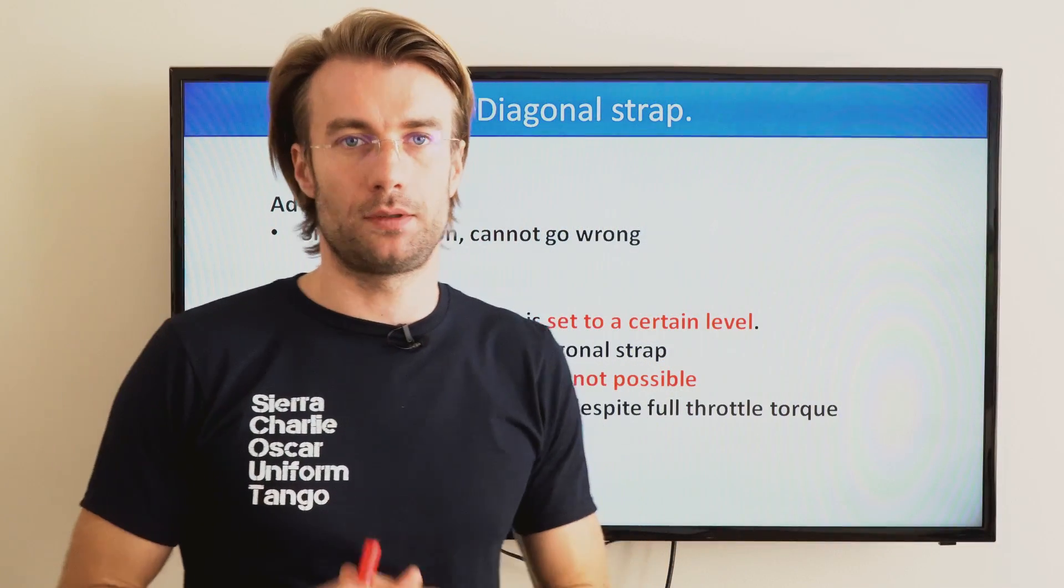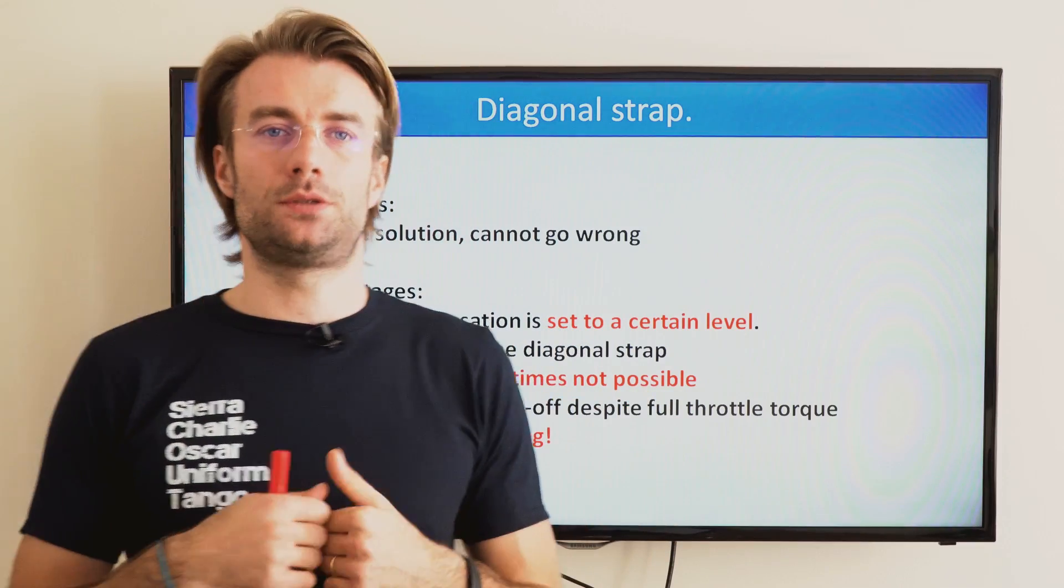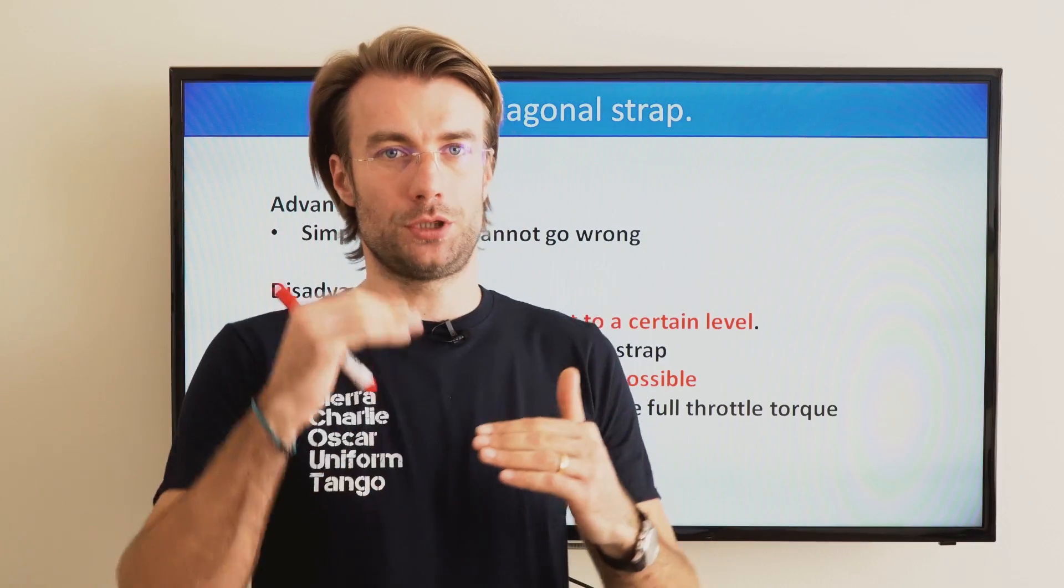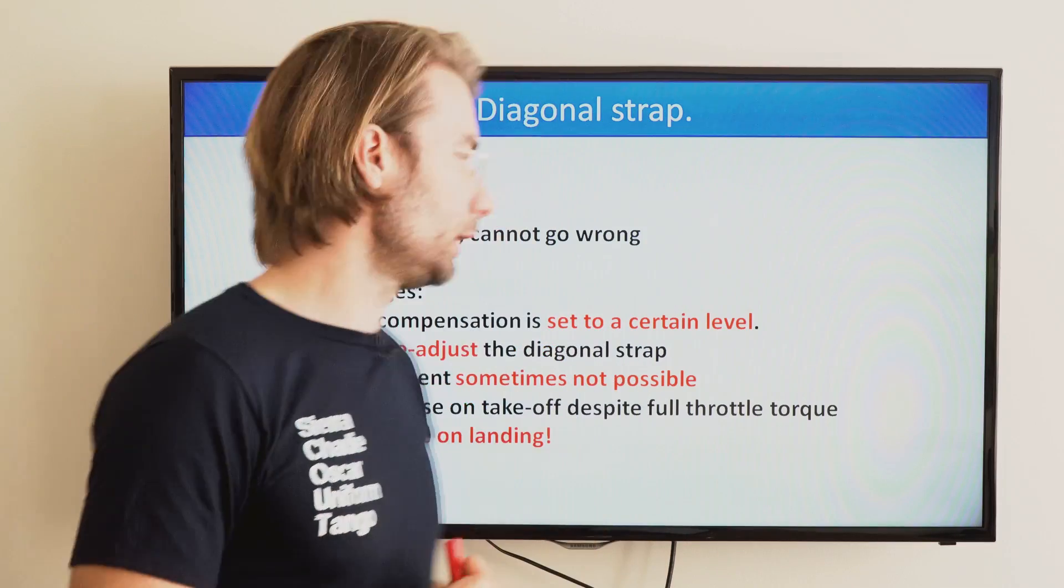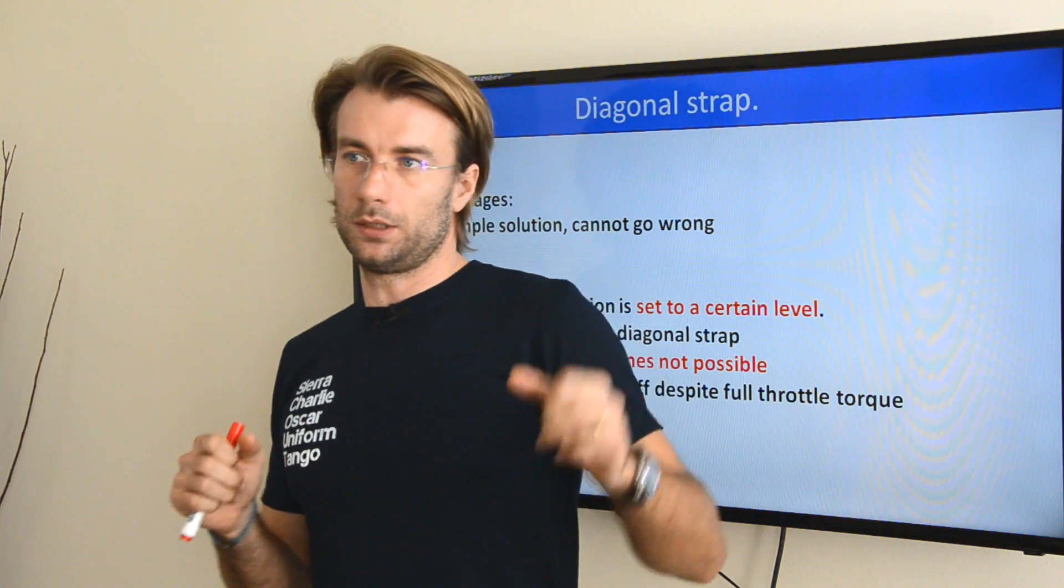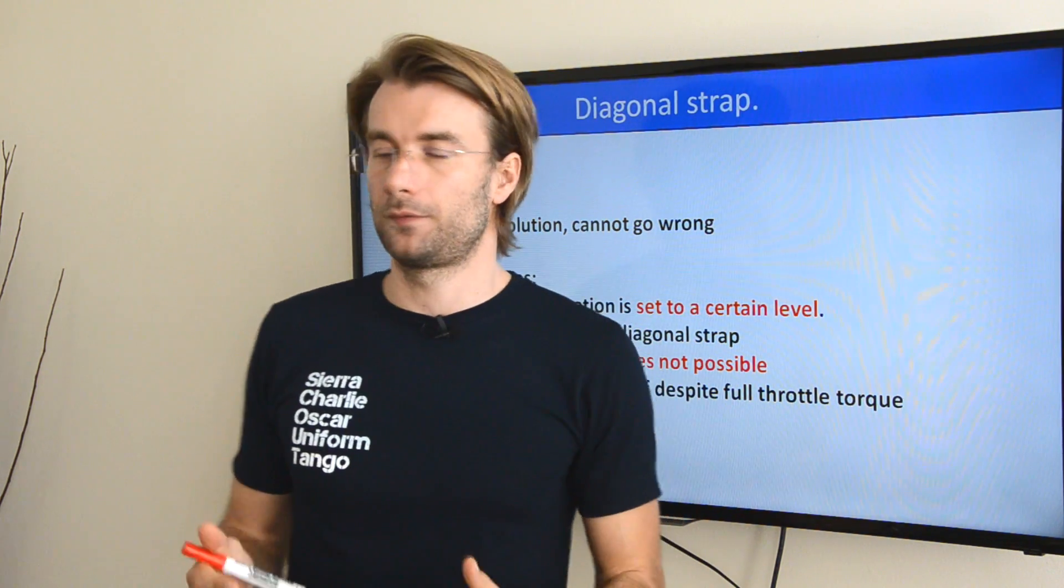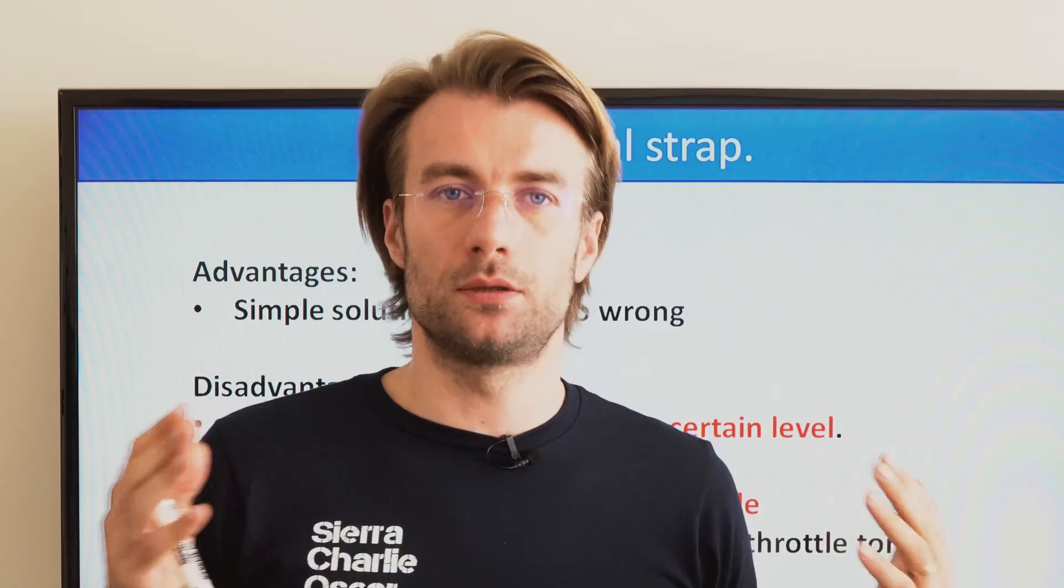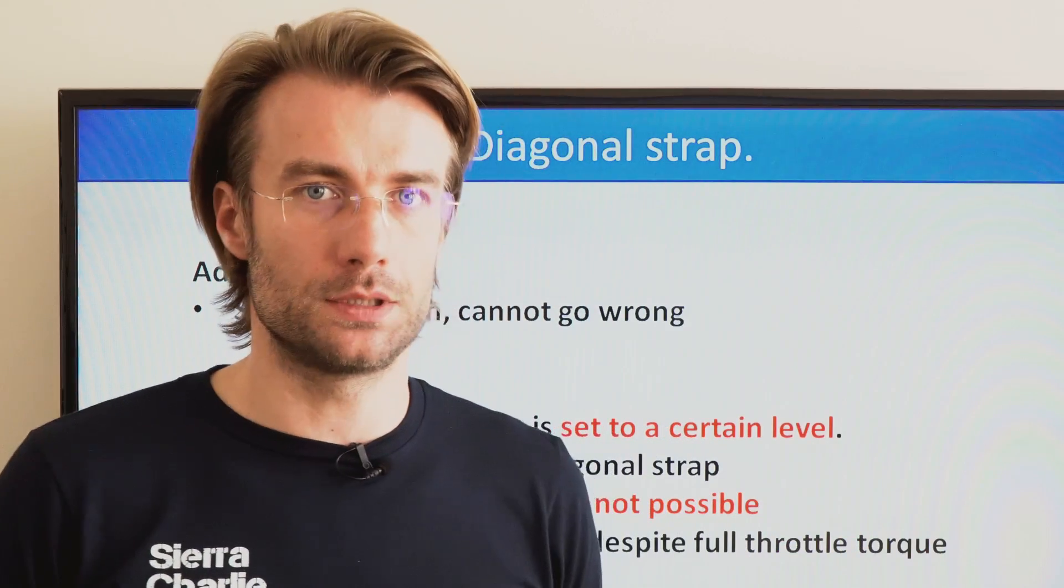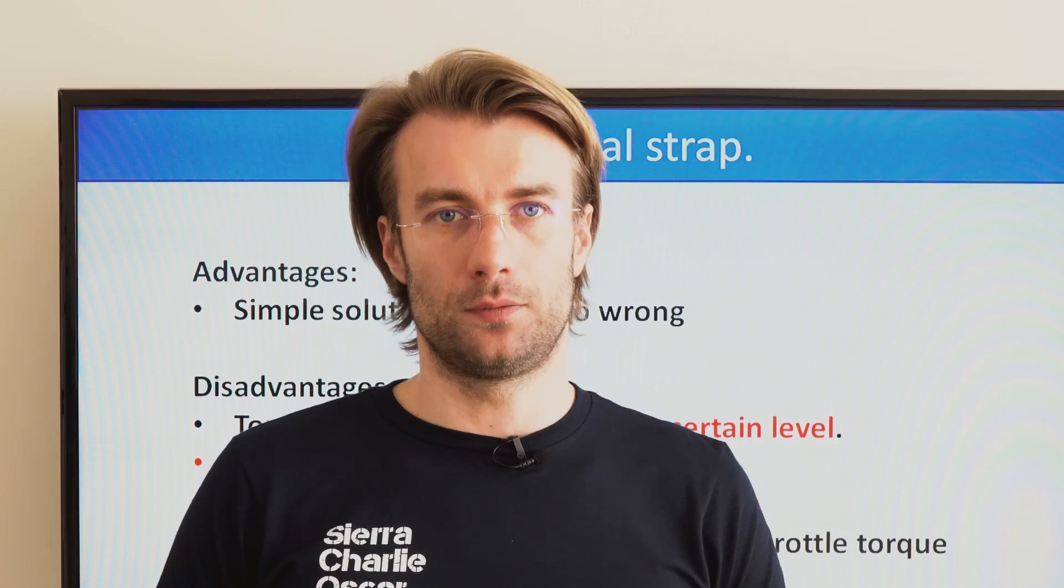There are some disadvantages however. The torque compensation is set to a certain level and you need to readjust every time you change your speed of flying. Readjustment is sometimes not possible, especially when you make quick changes - throttle up, throttle down for some aggressive freestyle flying. The diagonal strap must be loose for takeoff. This means you're facing the full torque right after takeoff and please don't forget to loosen your diagonal strap before landing.